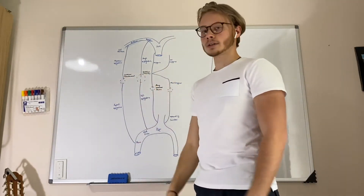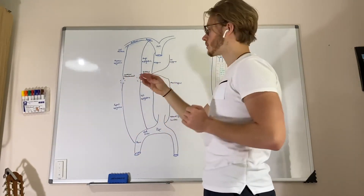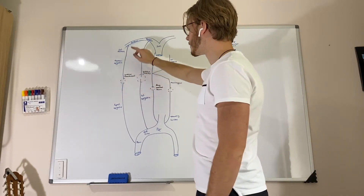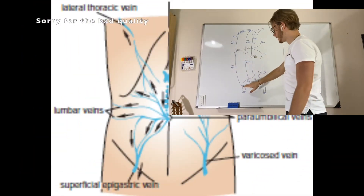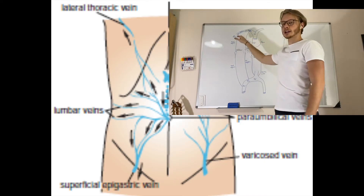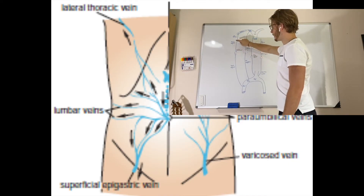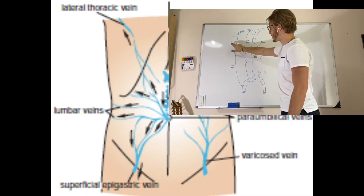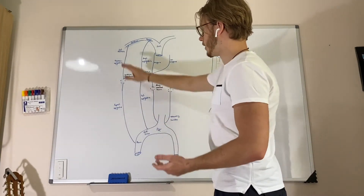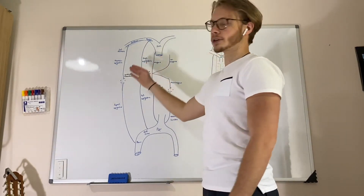We have two umbilical caval-caval anastomoses — one that is subcutaneous and one that is muscular. The subcutaneous umbilical caval-caval anastomosis is made up of the superficial epigastric vein coming from the IVC via the femoral vein. The SVC connection comes from the axillary vein, which gives off the lateral thoracic and then the thoracoepigastric vein — so the anastomosis is between the thoracoepigastric and the superficial epigastric. Note that we also had these two veins in the portocaval anastomosis around the umbilicus, but they also form a caval-caval anastomosis.